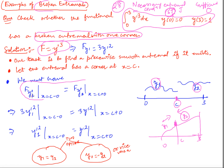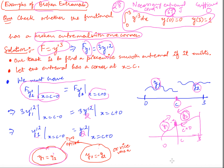We apply the Weierstrass conditions. The first condition is that f_{y'} from the left side should equal f_{y'} from the right side at c. Since f_{y'} = 3y'^2, we get 3y1'^2 = 3y2'^2 at c, which gives y1'^2 = y2'^2. So either y1' = y2' (smooth case, not a broken extremal) or y1' = -y2'.